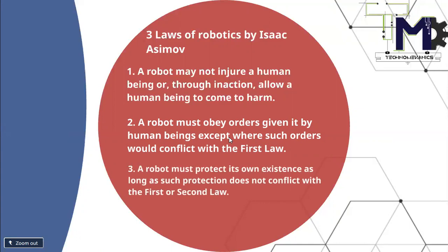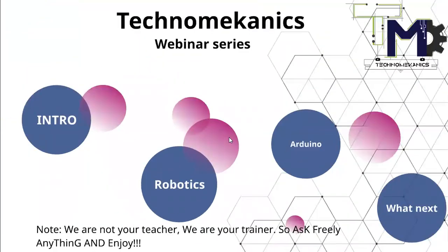The third law states that a robot must protect its own existence, as long as such protection does not conflict with the First or Second Law. For example, if you send a firefighting robot into a building to extinguish a fire — and it successfully does so — but you haven't programmed it to return, then it cannot be considered a proper robot. A proper robot must be programmed to both complete its task and return safely afterward.